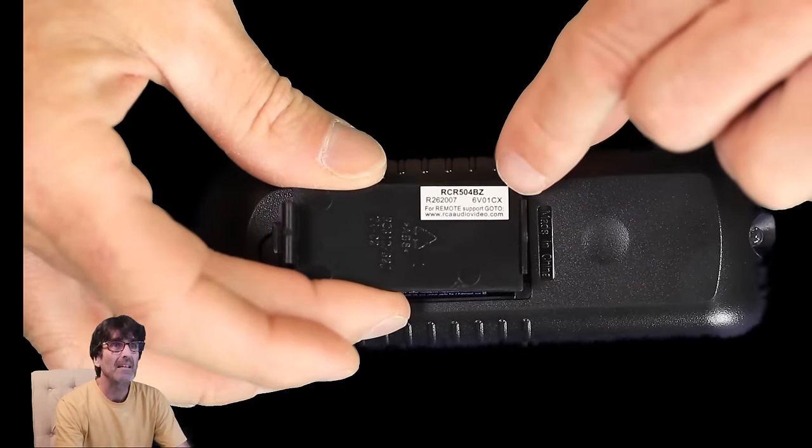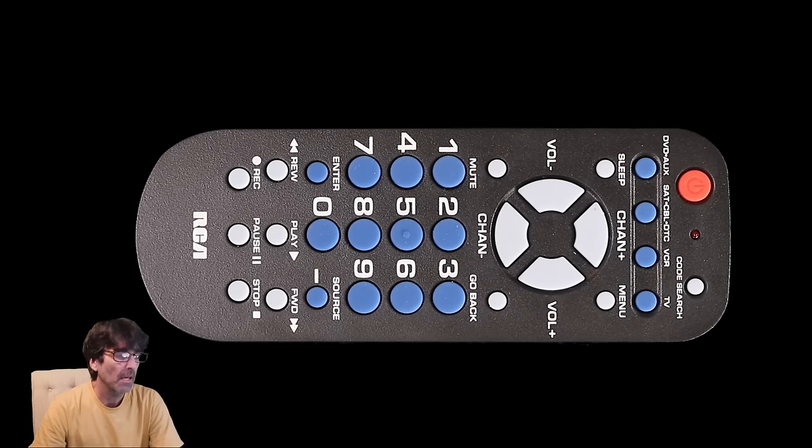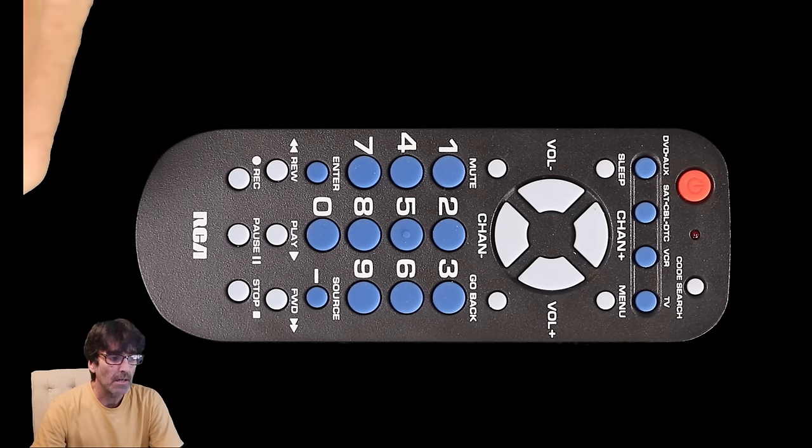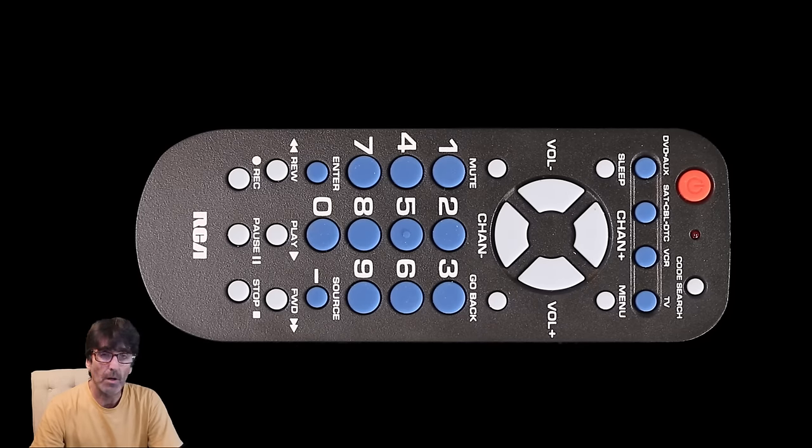And if you're interested, there's the model number too. So there are two basic ways to program this thing. One is the direct code entry method, and two is the code search. And I'll show you how to do both of those coming up here in the next moments.